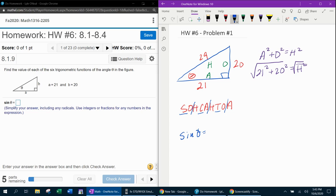So sine theta is O over H. Cosine theta is A over H. And tangent theta is O over A.